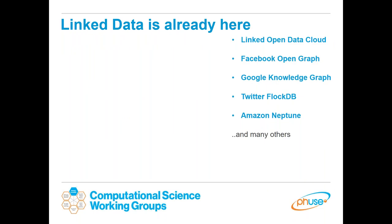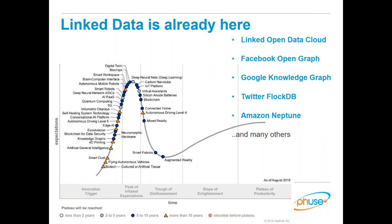Linked data might be new to some of you, but it's been around for quite a while. You may have heard of the Linked Open Data Cloud. Facebook uses something called Open Graph, Google has its own knowledge graph, Twitter uses FlockDB, and Amazon recently released Neptune, a linked data datastore. Just recently, knowledge graphs made an entry onto the Gartner hype cycle as an up-and-comer, forecast to reach the plateau of productivity in about five to ten years — though it could be even sooner.